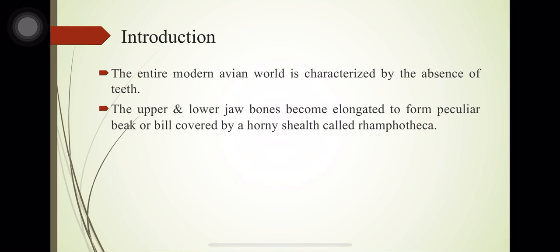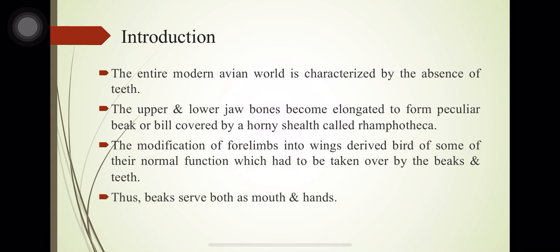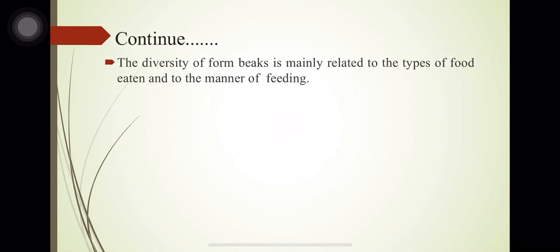The modification of forelimbs into wings deprived birds of some of their normal functions, which had to be taken over by the beaks. Thus the beak serves as both mouth and hand. The diversity of beak forms is mainly related to the types of food eaten and the manner of feeding.